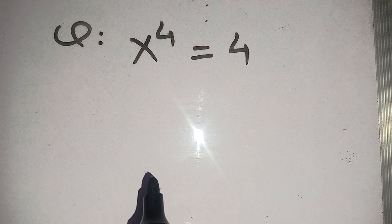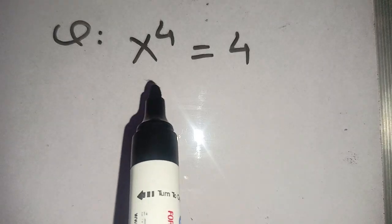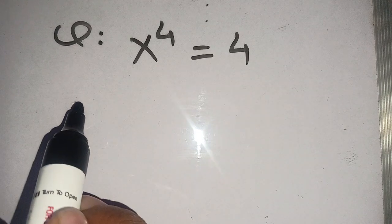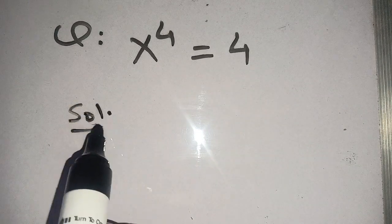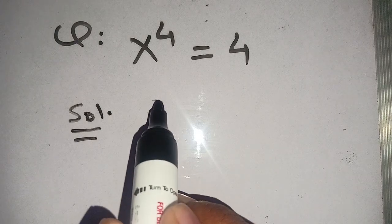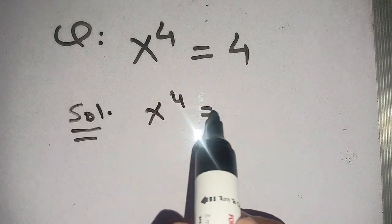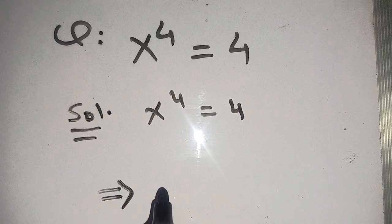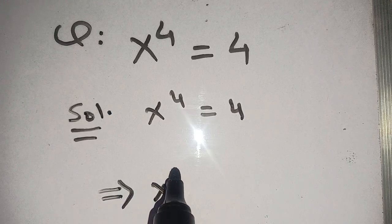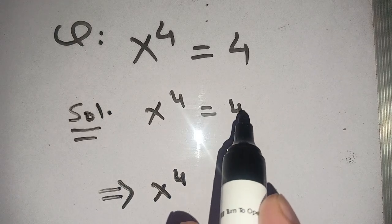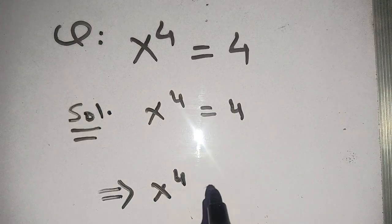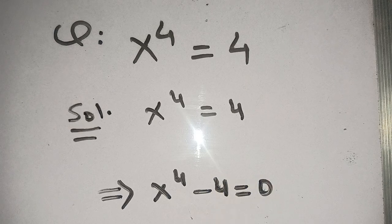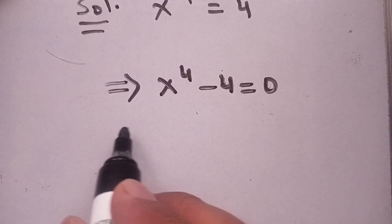Hello everyone. In today's video, we are going to solve this exponential equation: x to the power 4 is equal to 4. Let us solve this. First of all, we write the equation as x power 4 is equal to 4. Our next step: when we shift this 4 from the right-hand side to the left-hand side, it will become x power 4 minus 4 is equal to 0.